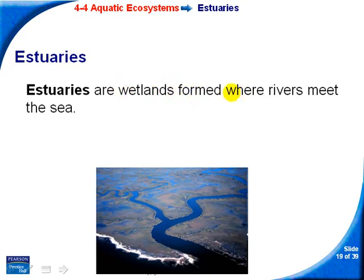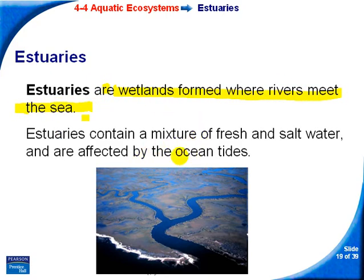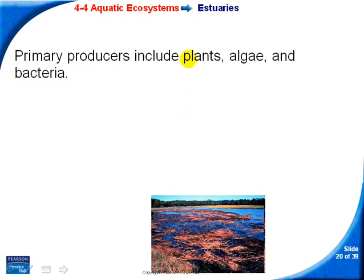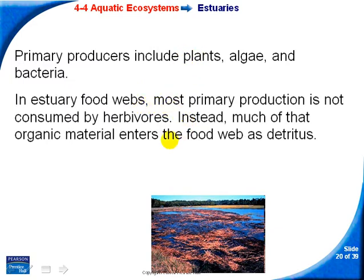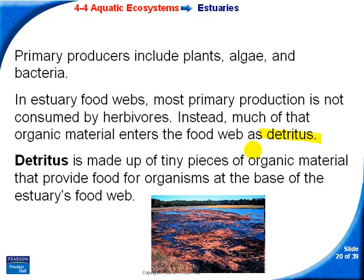Estuaries form where rivers meet the sea, creating a mixture of fresh and salt water. Tides coming in and out affect that mixture. Primary producers in estuaries include plants, algae, and bacteria. Estuary food webs also feature a lot of detritus — tiny pieces of organic matter, such as rotting grasses, that break down into small pieces of organic material and form the base of the food web.